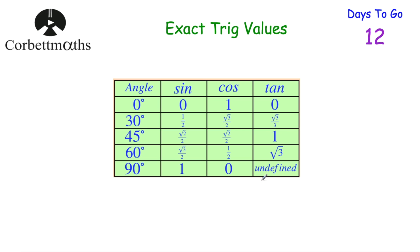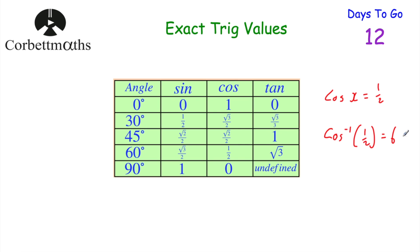And tan(90°) is undefined — there's no answer for that. So these are your exact trig values and they're quite useful to know. You might be given a question such as 'write down the value of tan(45°)' and without a calculator you just need to know it equals 1. Or you might be doing a trigonometry question on a non-calculator paper and get to a point where you're multiplying by sin(30°), or where cos of an angle equals a half and you need to know what that angle is — using inverse cos, that gives you 60 degrees.